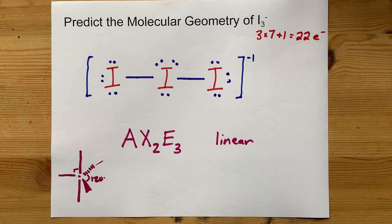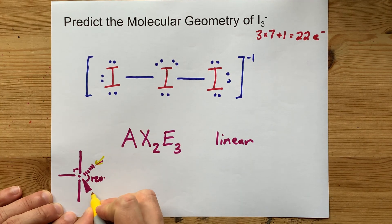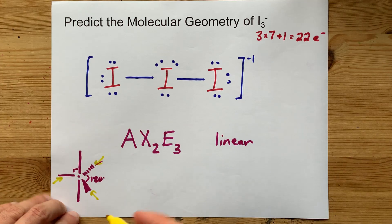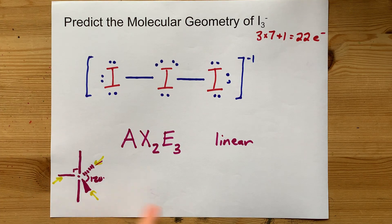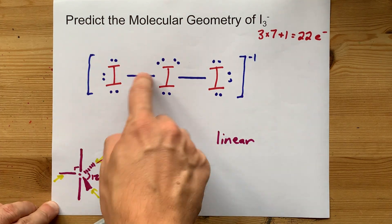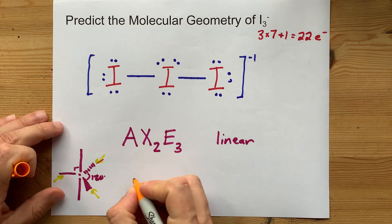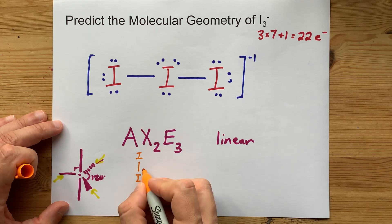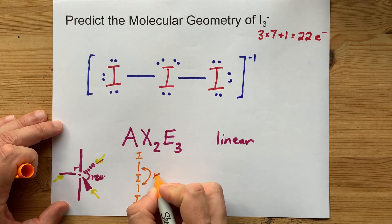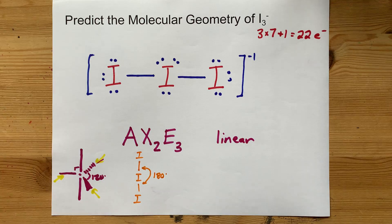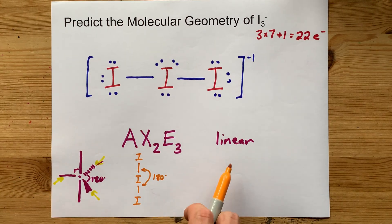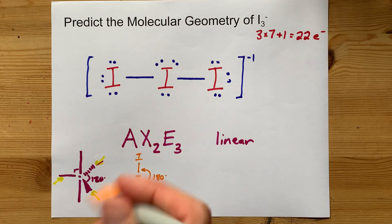The three lone pairs are going to take up this one and this one and this one, the three spots along the equatorial plane, so that by the time you're left with just the other iodines, you have to go above and you have to go below. And then by definition, these are 180 degrees away from each other. That's linear. That's why the molecular geometry or VSEPR shape is linear for AX2E3.